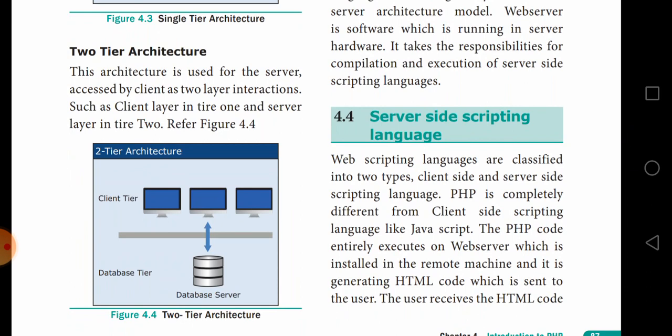Next is two tier architecture. This architecture of the server accessed by client has two layer interactions — a client layer in one tier and a server in another tier. This is called two layer architecture.